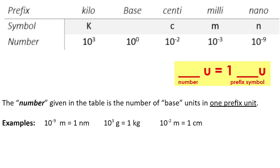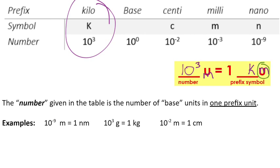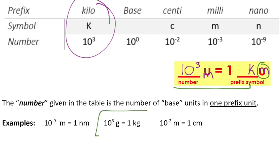The number that's in this table — focusing on kilo — 10 to the third, or a thousand of that base unit, let's say meter, is equal to one kilometer. Notice how I have the same unit on both sides, but on one side I have the prefix with that unit. So we can say 10 to the third meters equals one kilometer. Or if we use grams, then 10 to the third grams equals one kilogram. It's the same number and the same prefix symbol used to write multiple different unit equations.